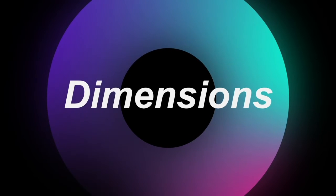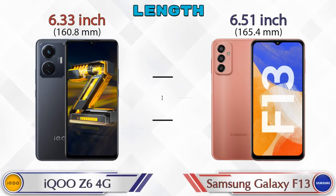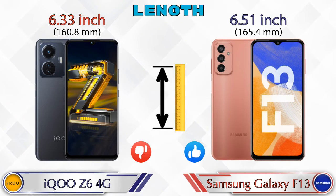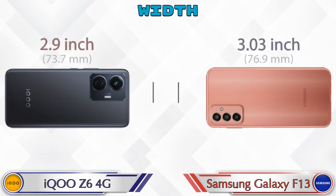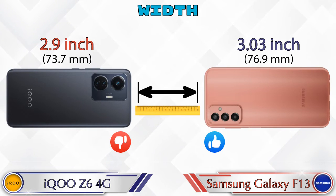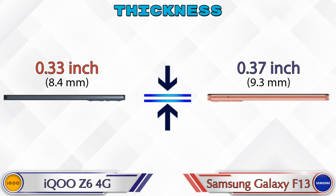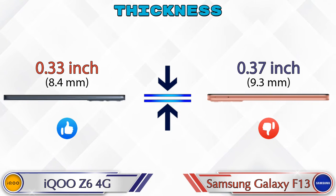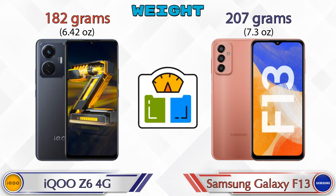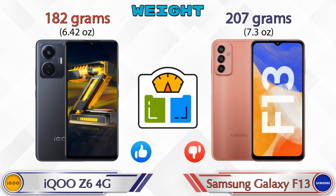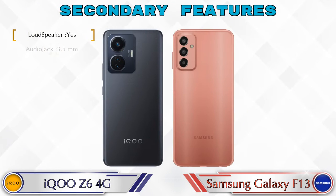Now let's check the details about dimensions. The length of the Z6 4G is 6.33 inches and the Galaxy F13 is 6.51 inches. Width: Z6 4G is 2.9 inches and Galaxy F13 is 3.03 inches. Thickness: Z6 4G is 0.33 inches and Galaxy F13 is 0.37 inches, which is bigger than the Z6 4G. Weight: Z6 4G is 182 grams and Galaxy F13 is 207 grams, which is heavier than the Z6 4G.